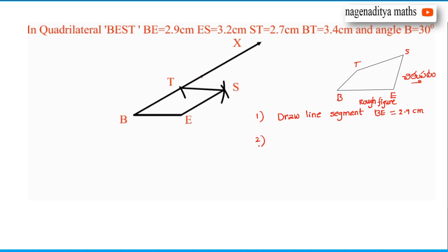Second step: Draw ray BX such that angle B is equal to 30 degrees.